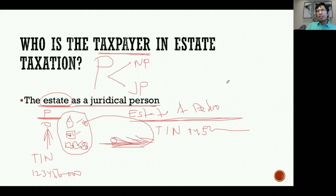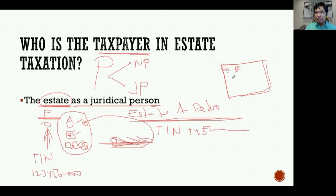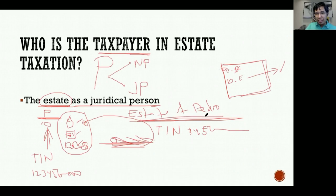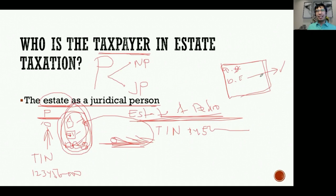On the CPA board exam, if asked who the taxpayer is, the answer is not the decedent - he is already deceased. The correct answer is the estate as a juridical person. If the choices only say 'estate,' that is acceptable, but technically the more precise answer is 'estate as a juridical person,' since estate alone simply means the properties. Looking at the estate tax return, the taxpayer name is shown as 'Estate of [Last Name, First Name, Middle Name].'